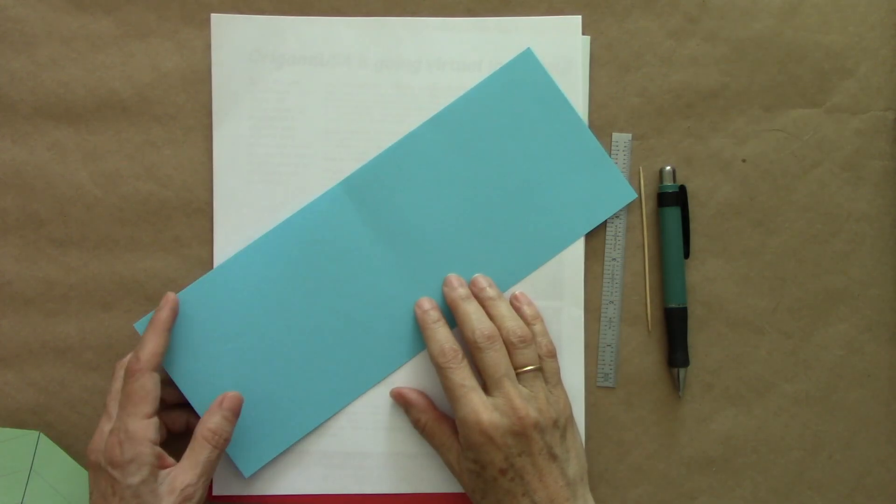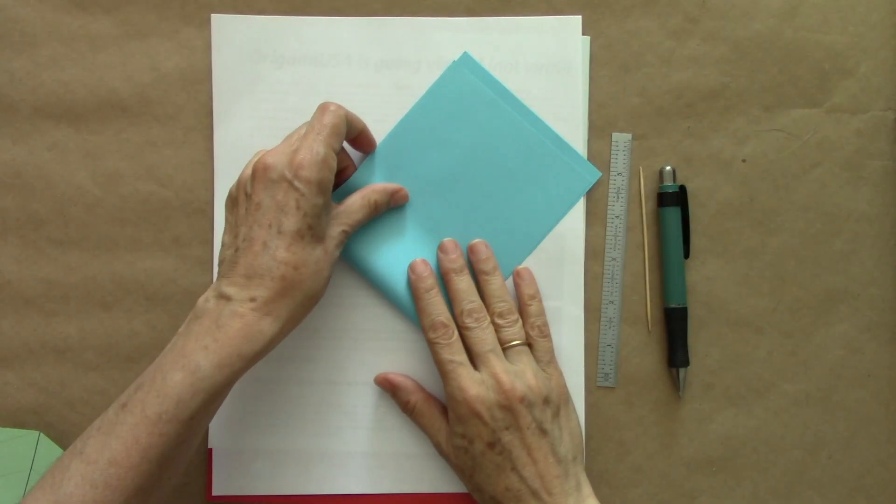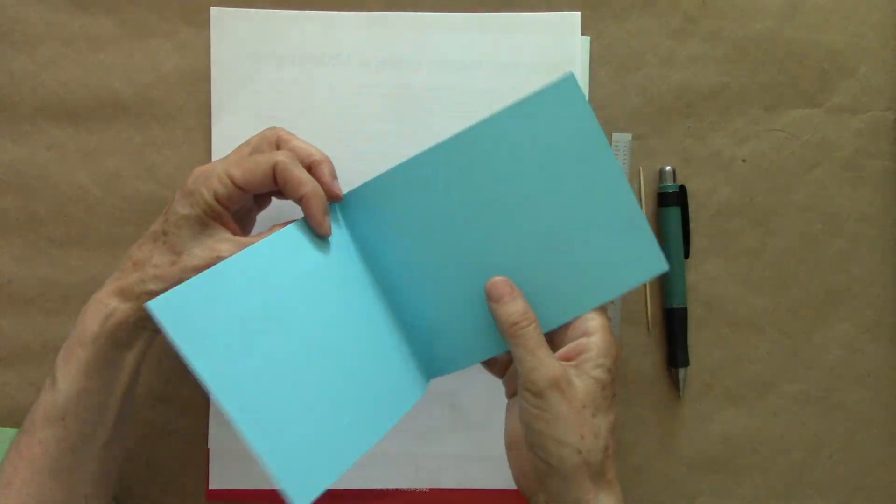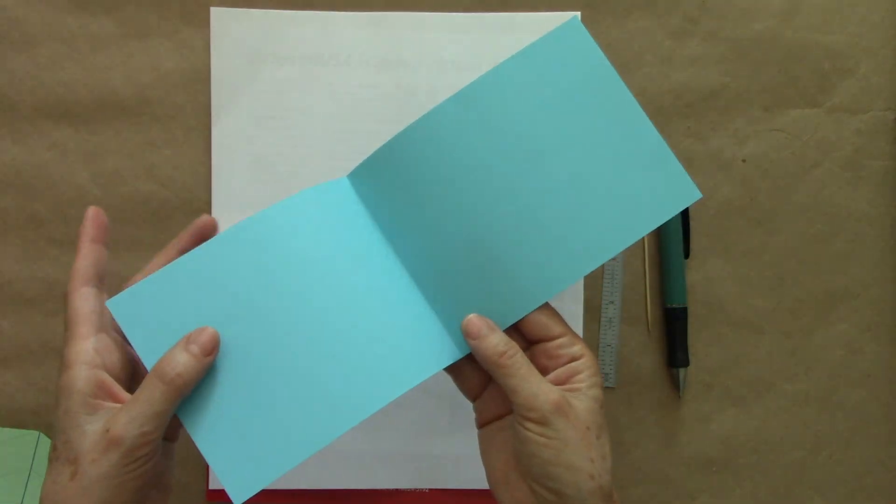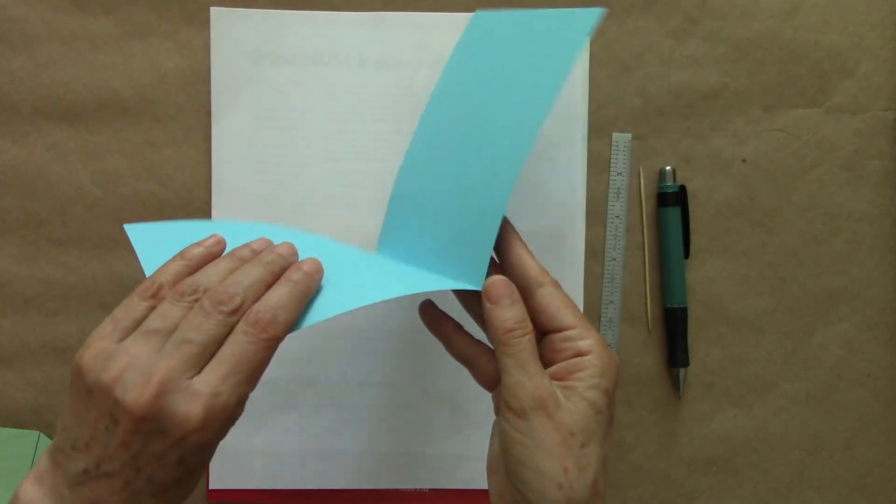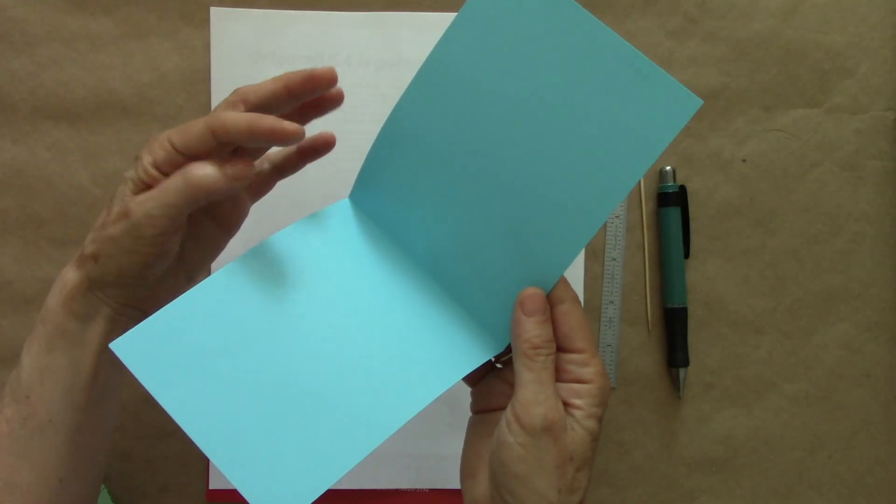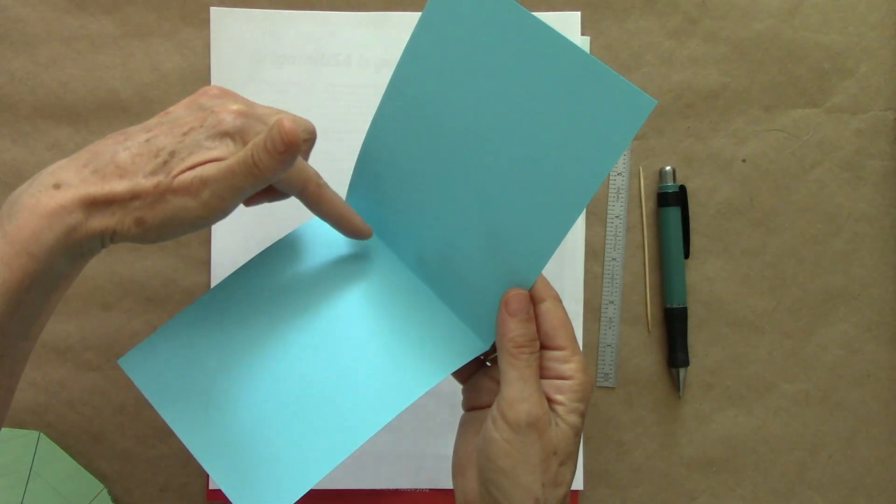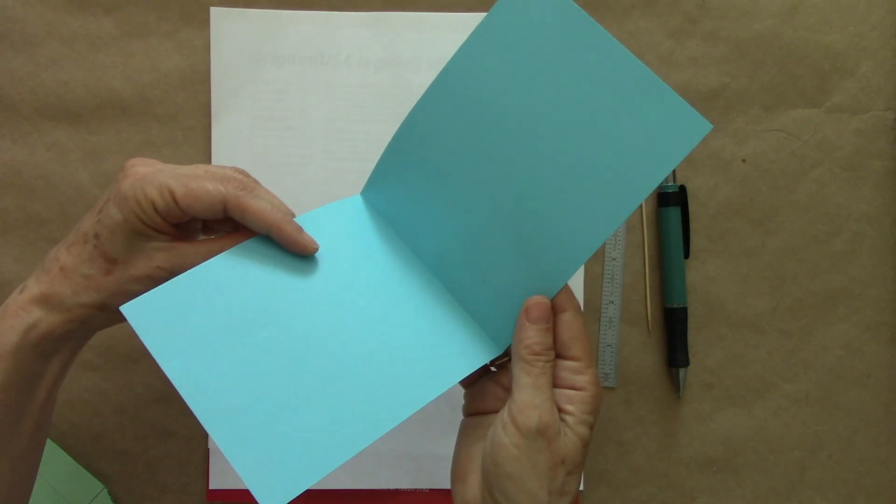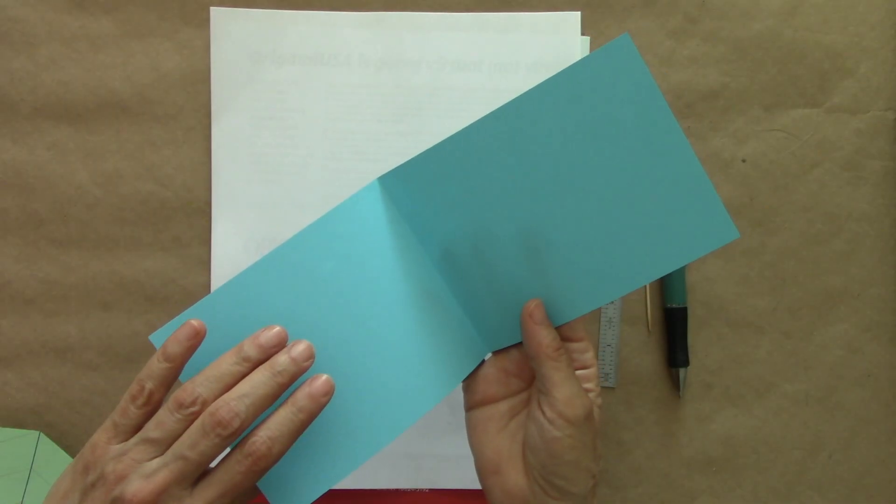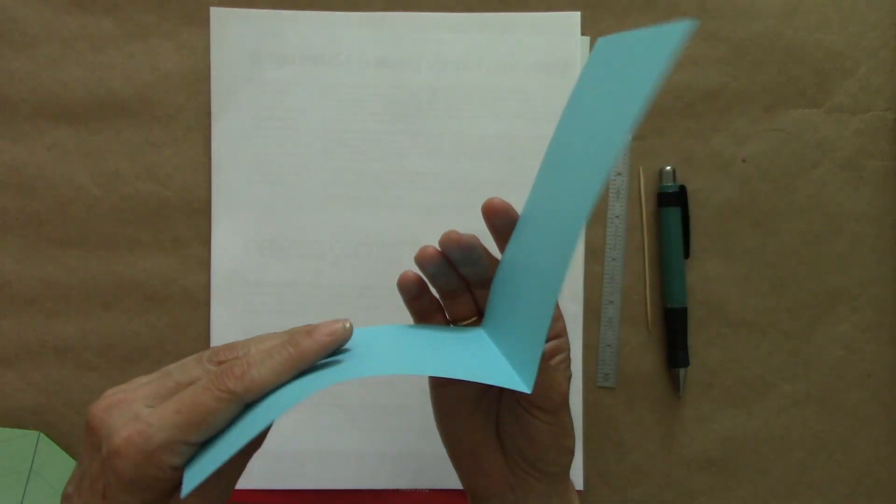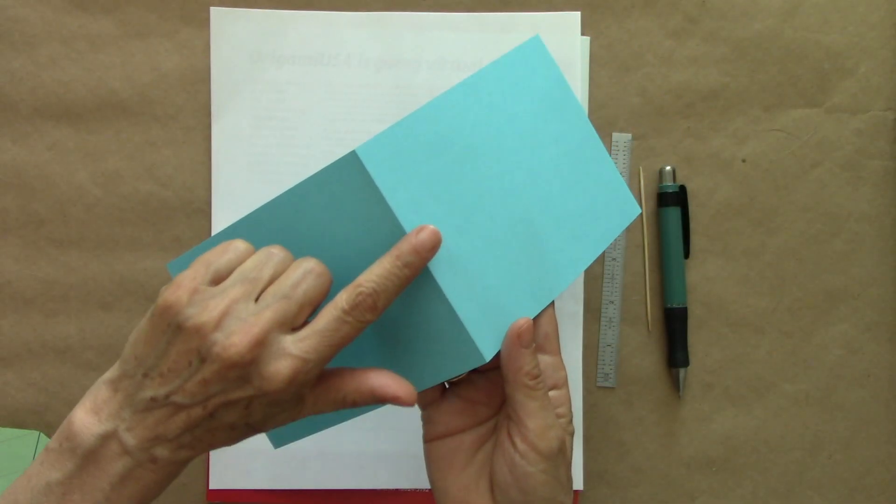When we fold a piece of paper, on one side, we will have what we call a valley fold, and we can imagine like a little river between two mountains in a valley.